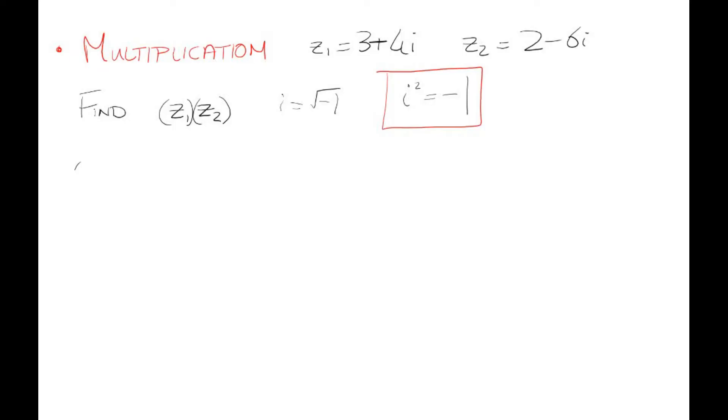We have z1 multiplied by z2, which gives us (3 + 4i)(2 - 6i). It's just like multiplying normal brackets. So 3 by 2 is 6, 3 by -6i is -18i, 4i by 2 is +8i, and 4i by -6i is -24i².